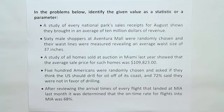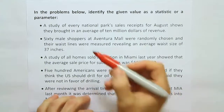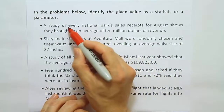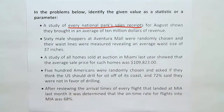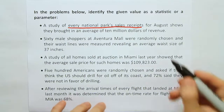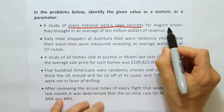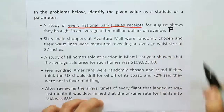Starting with the first one, it says: 'A study of every national park's sales receipts for August shows they brought in an average of $10 million of revenue.' When I read this, I see the phrase 'every national park's sales receipts.' The word 'every' means they looked at every single member of the population, so this average is a parameter. I'll put P next to it to indicate it's a parameter.